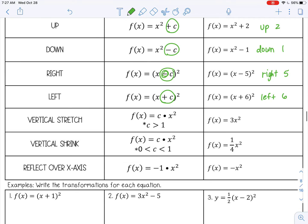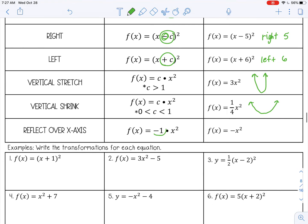For a vertical stretch, you're going to be multiplying by a number greater than 1. So 3x squared, that's going to stretch it up and make it a skinny parabola. And then a vertical shrink is going to be a number in between 0 and 1, like 1/4. That's going to flatten out your parabola. And then the last one is to reflect over the x-axis. That's where you multiply by a negative 1 out front, and that flips your parabola upside down.